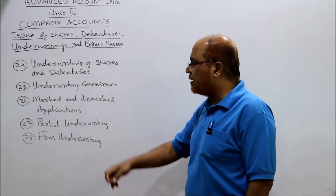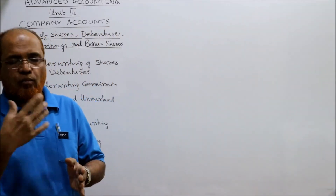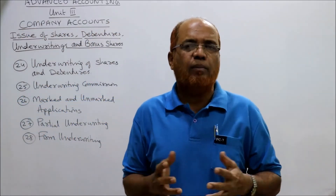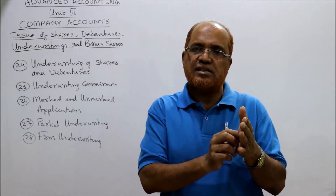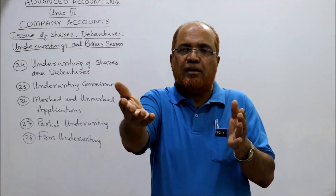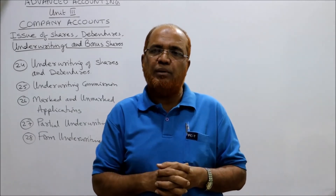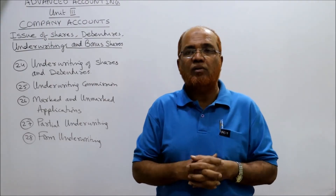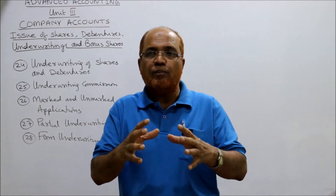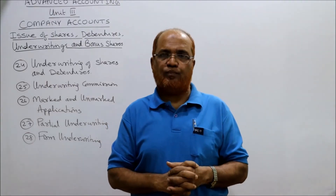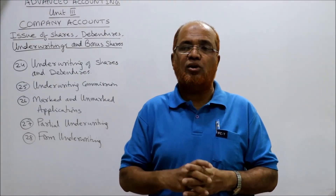Next is the topic of marked and unmarked applications. Underwriting can be done by one underwriter or more than one underwriter. When the issue amount is very large, no single individual underwriter will come forward, so two or three underwriters will jointly underwrite the issue. In that case, every underwriter will try to sell the maximum number of shares in order to reduce their own risk.